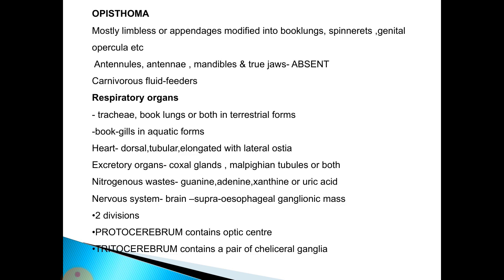The opisthosoma is mostly limbless, or appendages are modified into book lungs, spinnerets, genital opercula, etc. Antennules, antennae, mandibles, and true jaws are absent; arachnids are carnivorous fluid feeders. Respiratory organs include tracheae, book lungs, or both in terrestrial forms, and book gills in aquatic forms. The heart is dorsal, tubular, and elongated with lateral ostia. Excretory organs are coxal glands, Malpighian tubules, or both. Nitrogenous wastes include guanine, adenine, xanthine, or uric acid.